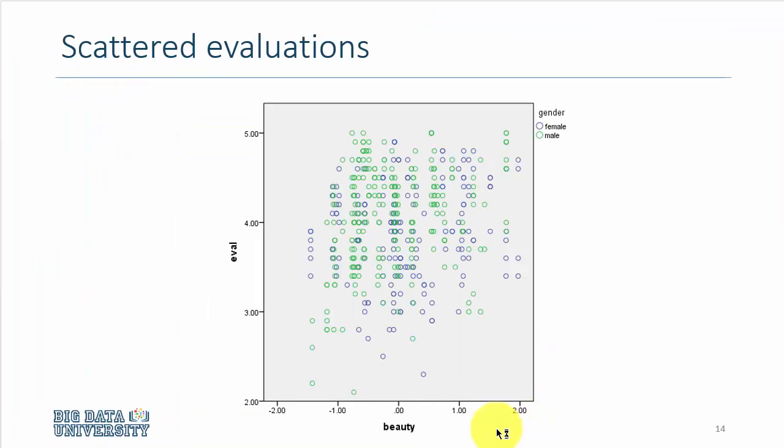If one has two continuous variables, such as the beauty score and the teaching evaluation, both are continuous, not categorical. The best way to depict them is using a scatter plot. So you're looking at a scatter plot where beauty score is mapped out on x-axis, and evaluations are laid out on y-axis, and the color of the dots represents male and female.